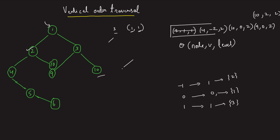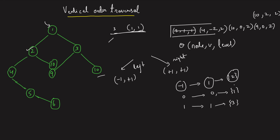The core rule is: moving left, vertical changes by minus-1 and level by plus-1; moving right, vertical changes by plus-1 and level by plus-1. Every time you pop a node, insert it into the map at its vertical, then its level, then into the multiset or priority queue. This gives the correct vertical order traversal regardless of which tree traversal you use.